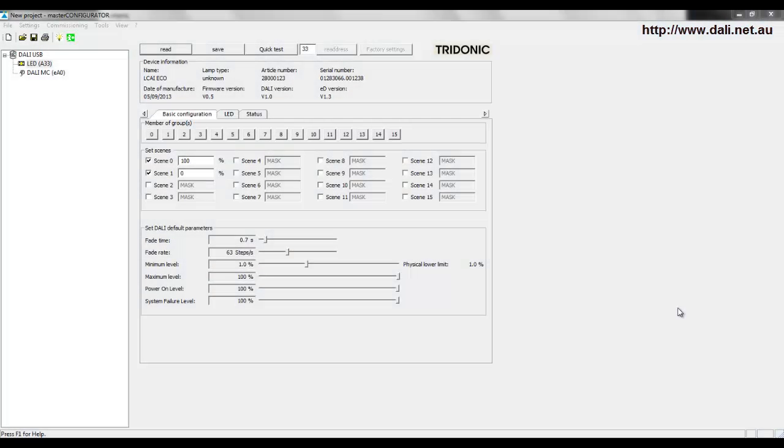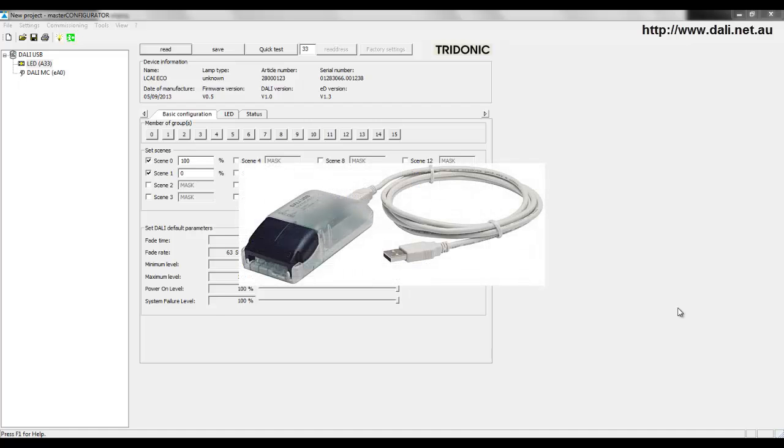Now let's have a look at how to change and set up the Fade Rate setting. If you are a system integrator then you may have your own control gear software which may allow you to change these settings. If not, you can pick up a Dali USB from our web store and the free master configurator software to change the settings in each light.